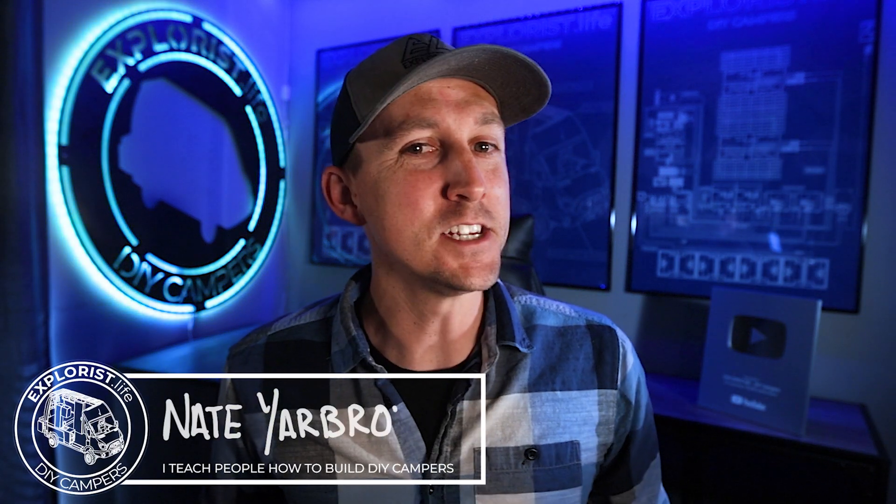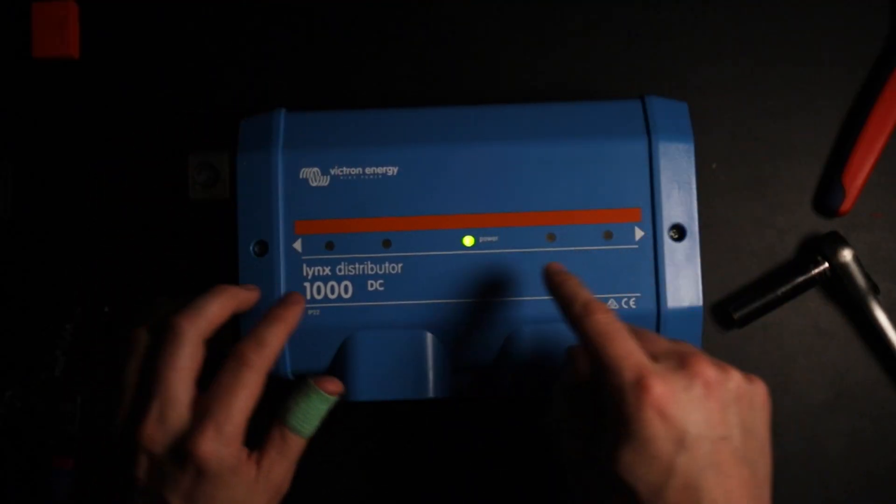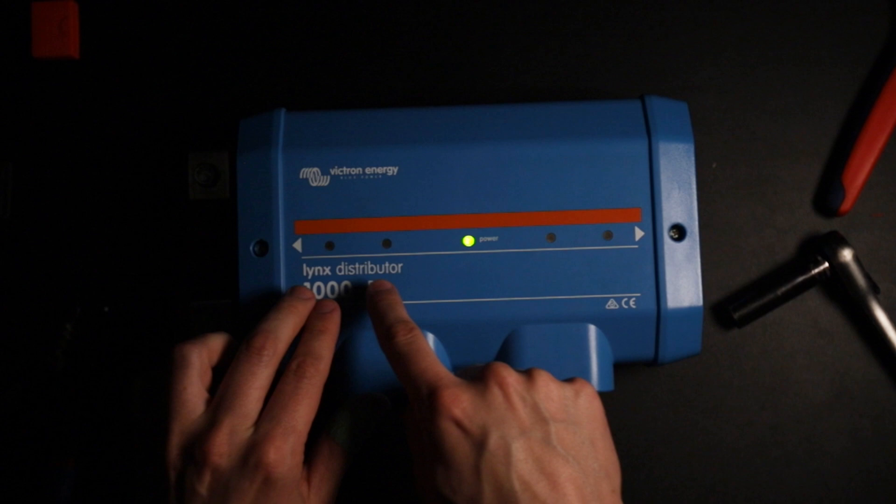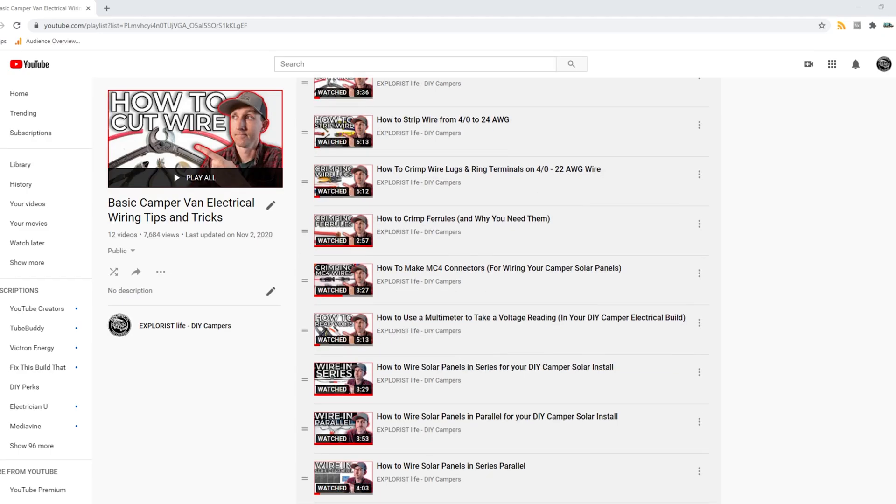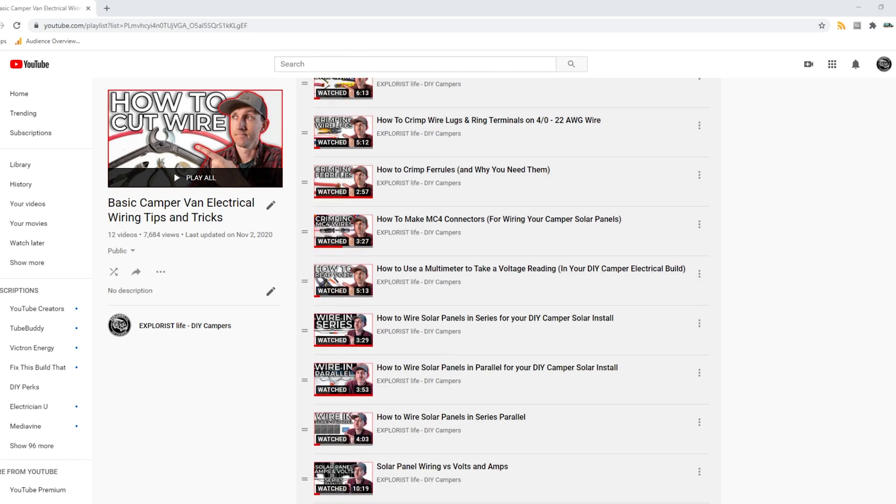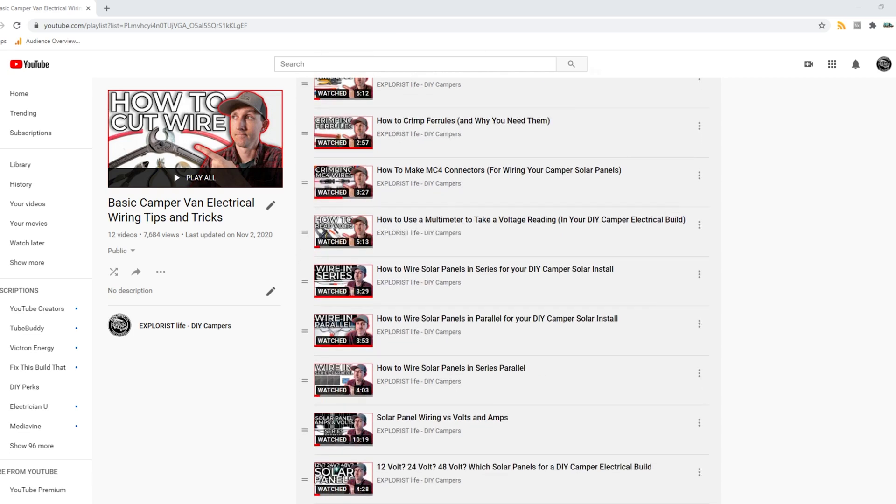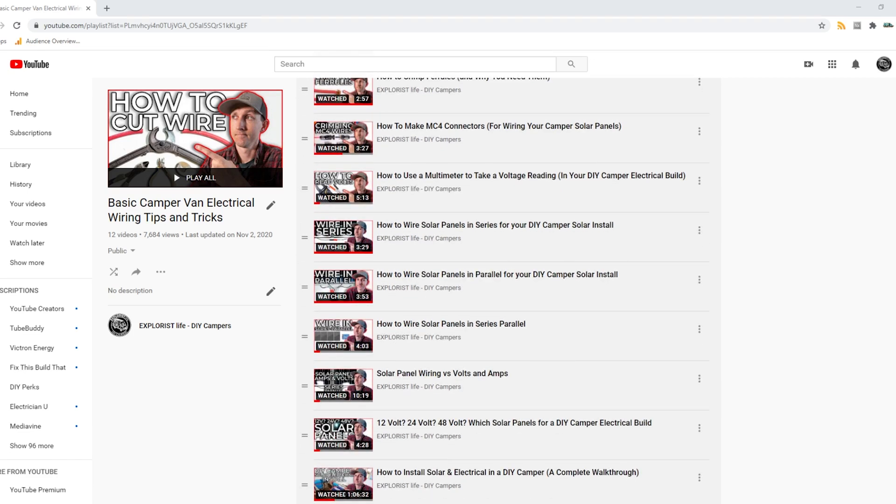Hey everybody, it's Nate from Explorers.Live. I teach people how to build DIY campers and in this video I'm going to teach you how to make the lights on a Victron Lynx distributor work when not paired with a Lynx shunt or Lynx BMS. This video is episode number 25 in a series where I teach you all the basic electrical skills and concepts you'll need to tackle the next electrical project in your camper.